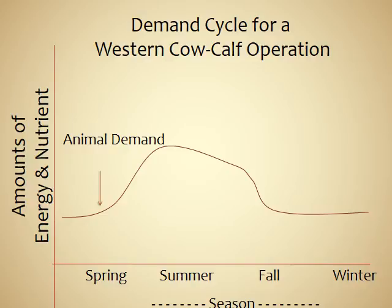After that peak in late spring and early summer, the cow's nutrient requirements go down little by little because the calf is getting older and beginning to consume plant material, becoming less reliant on the cow. In early fall the calf is weaned and the energy requirements of the cow drop precipitously because she's no longer lactating and can conserve that energy.